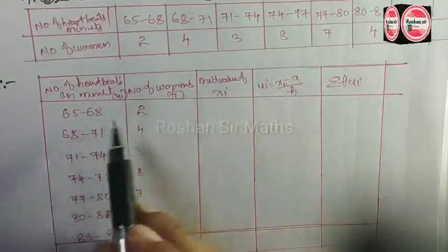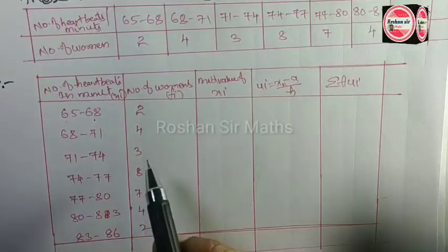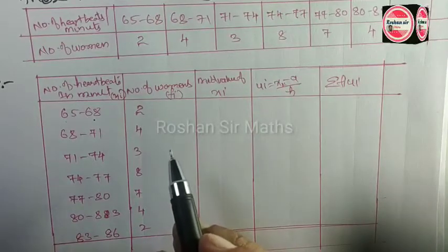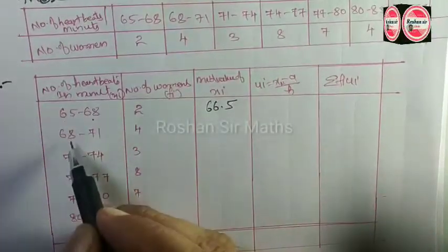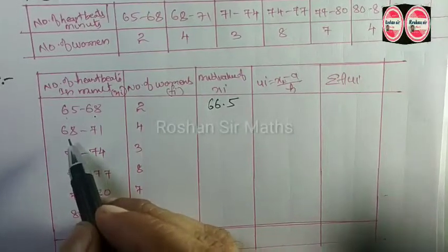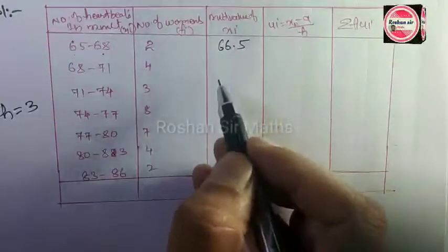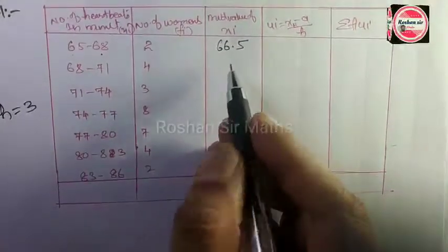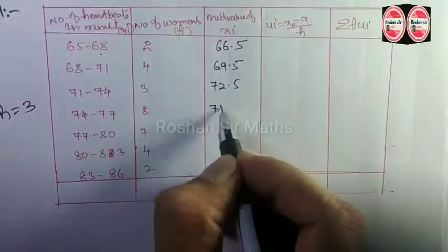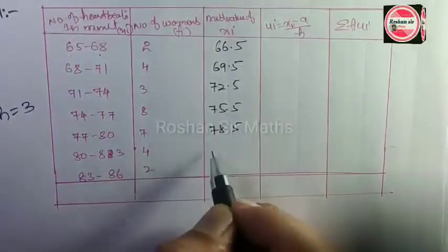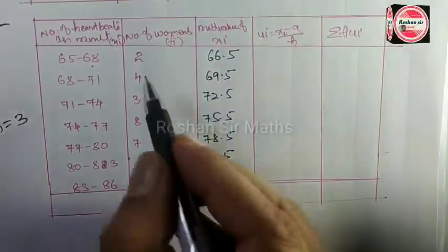First box 74-77, then 77-80, 80-83, 83-86. We calculate the class marks: third class is 68+71 divided by 2 equals 69.5, then 72.5, 75.5, 78.5, 81.5, 84.5. Now in the second column, see the largest frequency, which is 8.